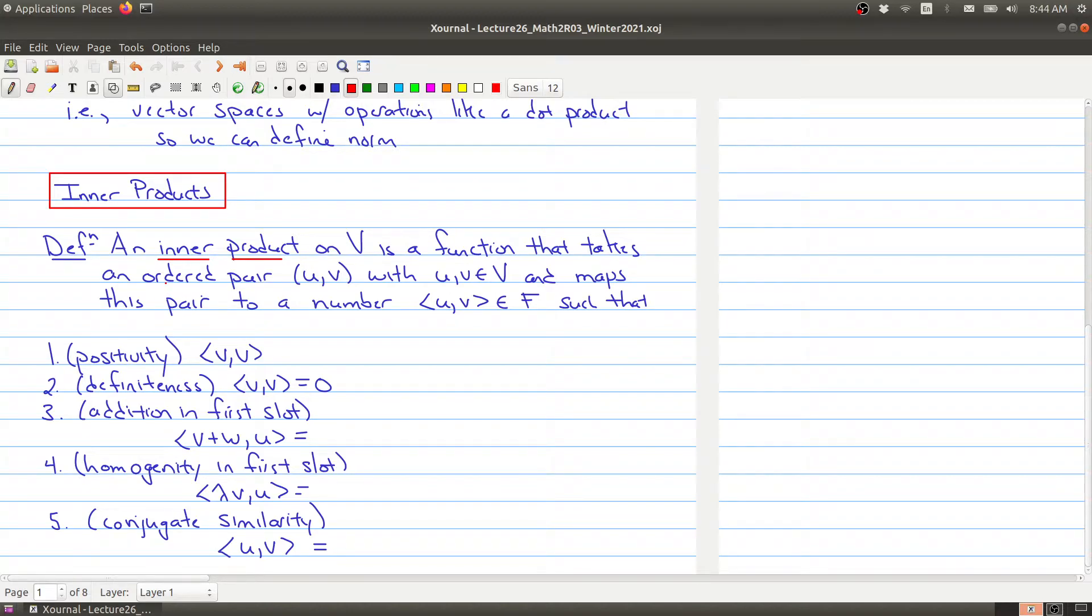...ordered means that there's a first element and a second element, u, v, with u and v in our vector space, and maps this pair to a number. So we have the angle brackets, u, v, and f. So you want to think about taking a pair of vectors, and you're mapping it to a number inside of your field, so either the reals or the complex numbers, such that the following properties are all true.